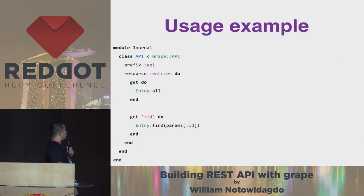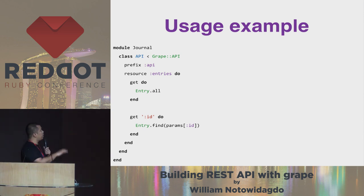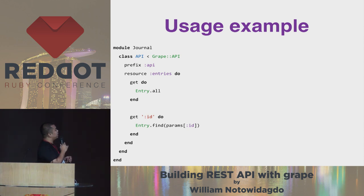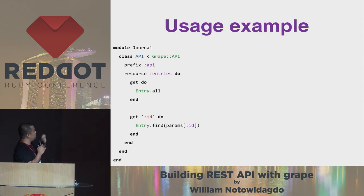This is a usage example of GRIB. As you can see, there are a few DSL we can use, like prefix, resource, and get. You can catch the idea — we define the resource and we define the method behind the resource.